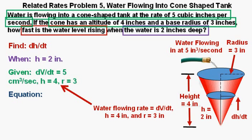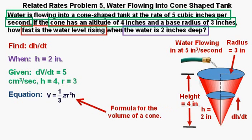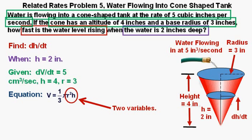And our equation is the formula for the volume of a cone: V for volume equals 1/3 πr²h, h being the height of the cone. One thing we need to do to take care of the two variables here, r and h, that would be nice, is to eliminate one of these variables.